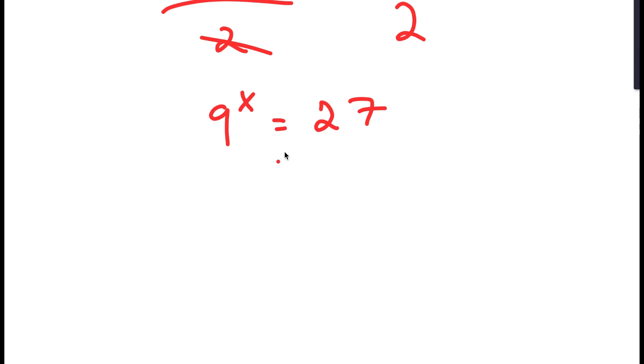So to find the exact value of x, I'm going to make the bases of these two the same. So 9 is the same thing as 3 squared and 27 is the same thing as 3 to the power of 3.